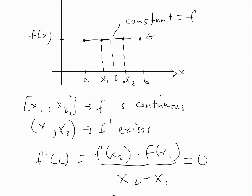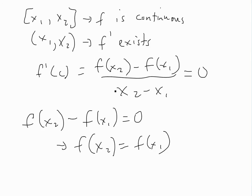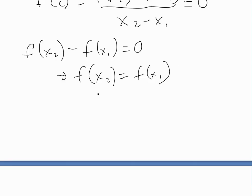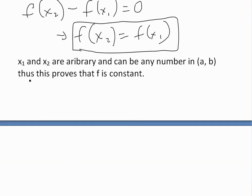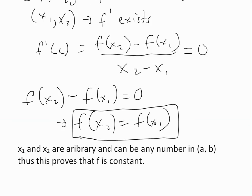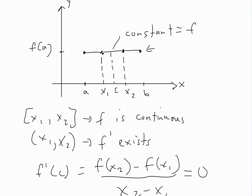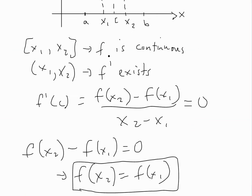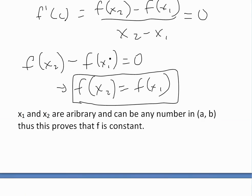Remember, the numbers x1 and x2 we picked are arbitrary — they can be any number in [a, b]. Thus, this proves that f is constant. It doesn't matter what the inputs are; they're going to give the same value. So f is going to be constant — a straight horizontal line.